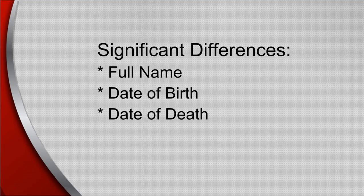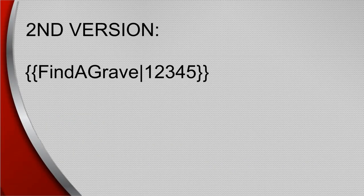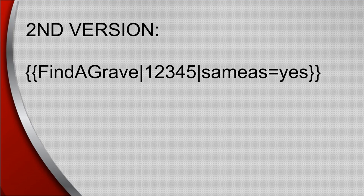Any significant difference between the profile and the memorial will generate a suggestion. There are two other versions. Between the memorial number and the closed brackets, add another vertical bar and type 'same as equals yes'. This means the memorial belongs to the WikiTree profile, but regardless of the name and dates in the data section, differences will generate various suggestions.